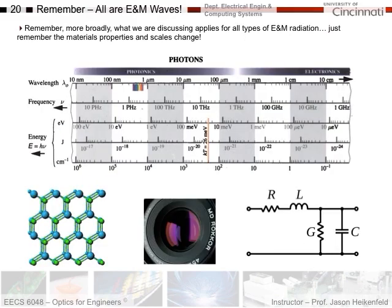I want you to remember that everything we're doing in this course applies to wavelengths beyond visible. They're all electromagnetic waves. We're right here in the visible spectrum, but you can go all the way out to short wavelengths, and all the way out through very long wavelengths, which get you into electronics such as microwave and radio waves. What we learned for visible light applies to short wavelengths for characterizing materials, and to longer wavelengths as well.